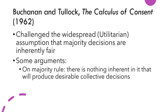Another representative work is Buchanan and Tullock's Calculus of Consent (1962). Their work relates to rational choice theory's notion that the collective is irrational. One example of their argument is that majority rule does not necessarily produce desirable collective decisions. You can consult the lecture notes for their other arguments.